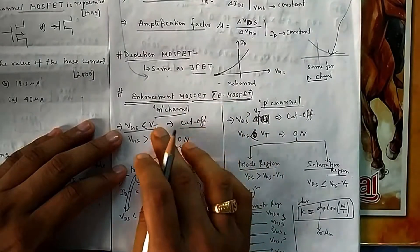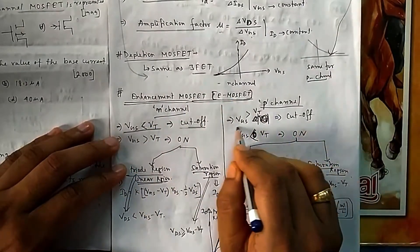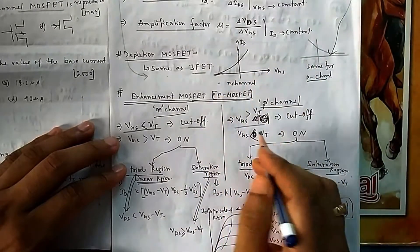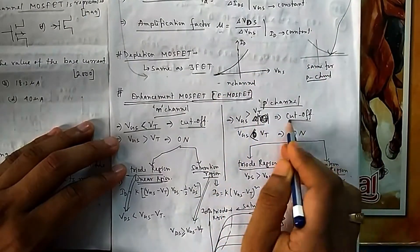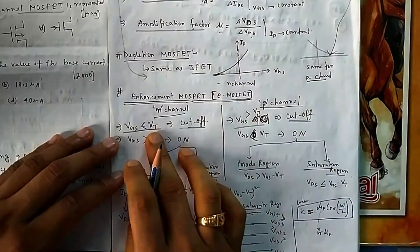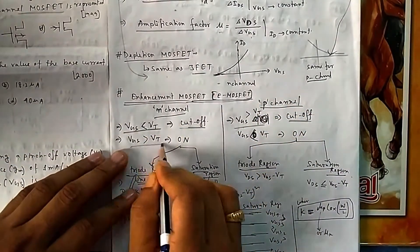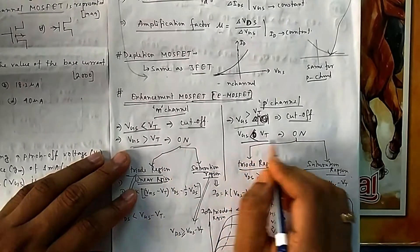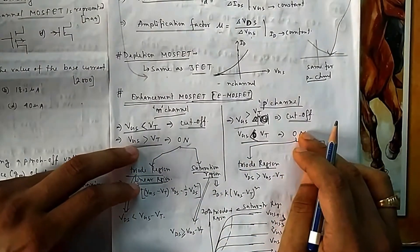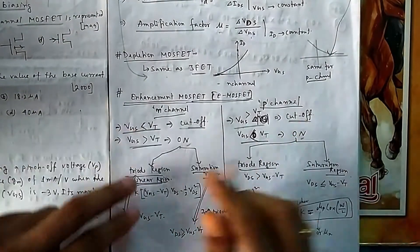For P-channel, if V_GS is greater than V_T, it is cutoff. So for N-channel, V_GS must be greater than V_T to turn on; for P-channel, V_GS must be less than V_T to turn on. Up to this point it is similar to JFET and depletion MOSFET.